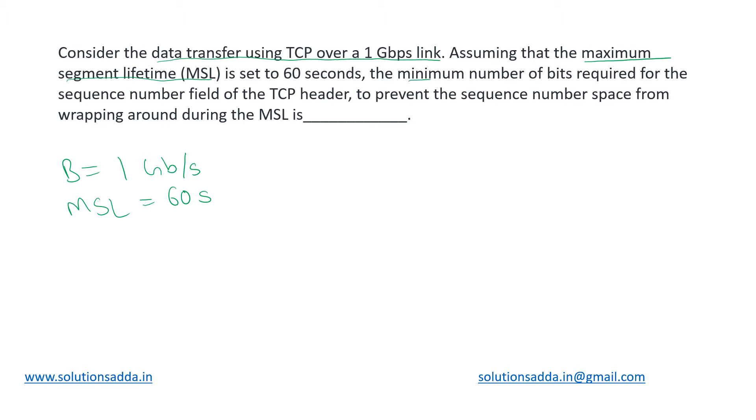We have to determine the minimum number of bits required for the sequence number field of this TCP header to prevent the sequence number space from wrapping around during this MSL. Now we know that in one MSL we need to have all the segments with unique sequence numbers. They cannot wrap around because we cannot have two segments with the same sequence number.